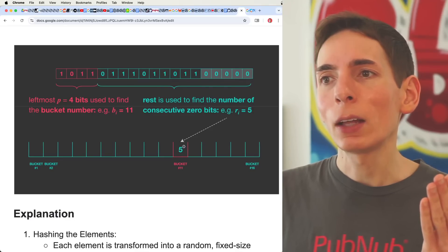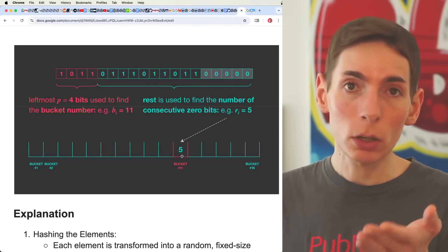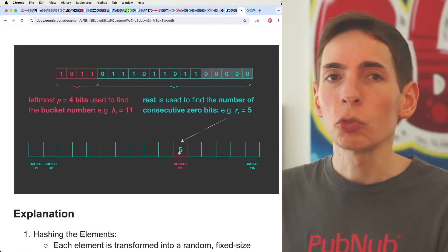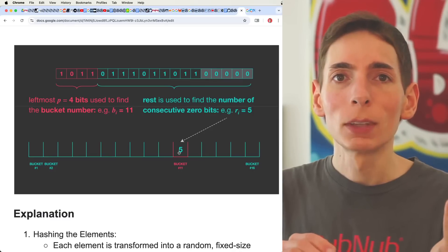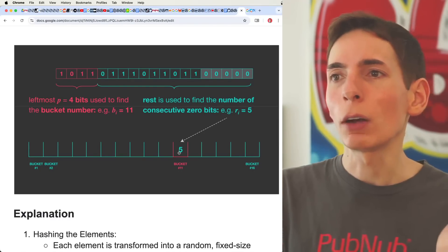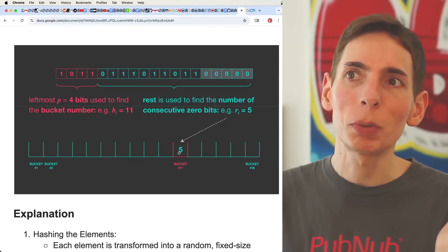And then if that element, the number of zeros is bigger than the current value in the bucket, then you'll update the bucket. If it's smaller, then you just keep that value the way it was before. And so now what you're doing is creating a count of heuristics across all of your buckets based on the unique set.